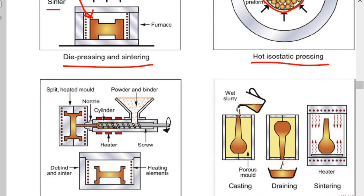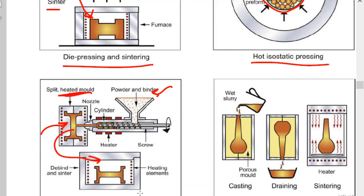Powder injection molding is similar to injection molding studied earlier, except that instead of polymer, a powder and binder mixture is used. It is passed through a screw and cylinder arrangement and pushed into a cavity formed by the mold. The powder is compressed and takes the shape of the mold, then taken out and heated in a furnace — called sintering — to obtain the required strength.